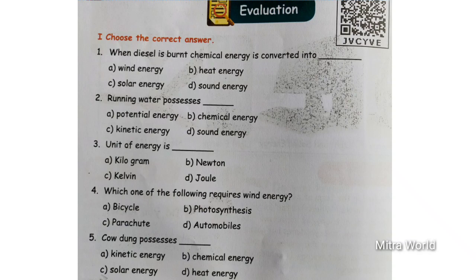Fifth one — cow dung possesses dash. Options: kinetic energy, chemical energy, solar energy, heat energy. We get gas from cow dung, and that gas releases heat energy. So cow dung possesses chemical energy. Option B: chemical energy. I hope you all have chosen the correct answer. Now check your answers.